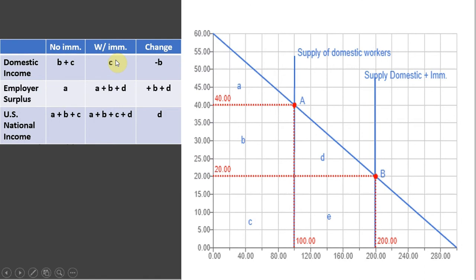Okay, moving to the situation with immigrants, the wage falls to $20. And now at a wage of $20 and 100 domestic workers, domestic workers get an income equal to area C or 20 times 100. So domestic income, the amount of income going to workers falls in the face of immigration, and we're labeling that as area C. The change here, the loss in income is minus B. So domestic workers' income falls by area B.